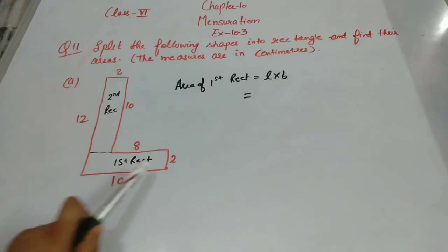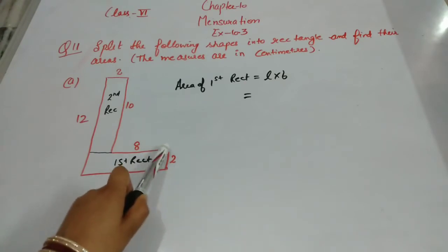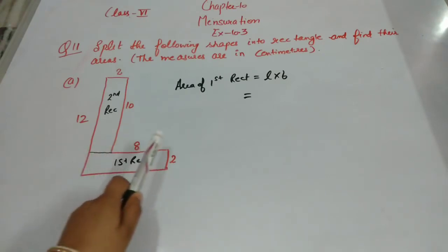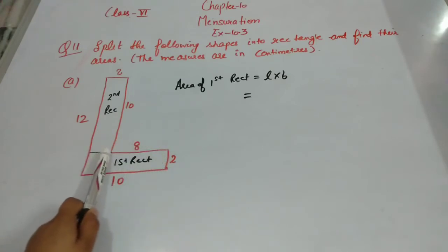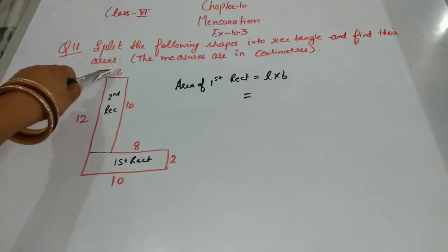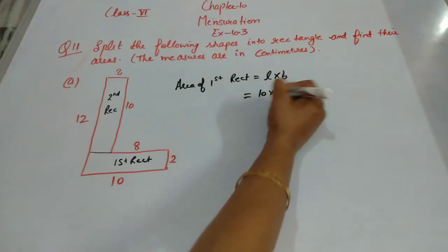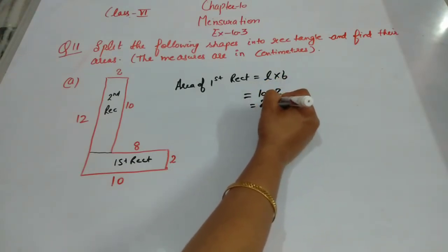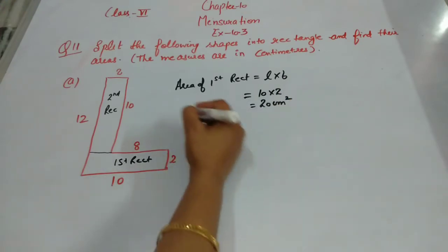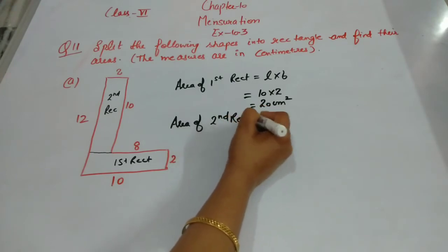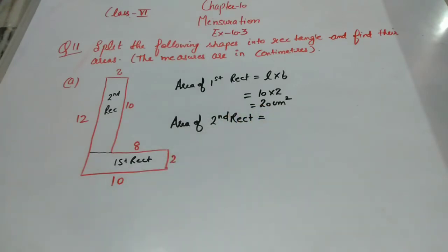The longer side — the length is 10. For the breadth, you have 2 plus 8, which gives you 10. So the area of the first rectangle is 10 into 2, which equals 20 centimeter square.